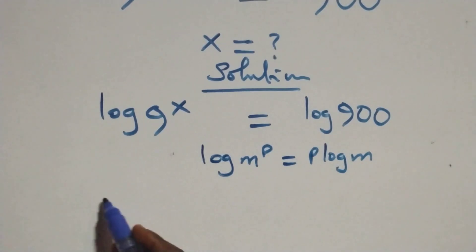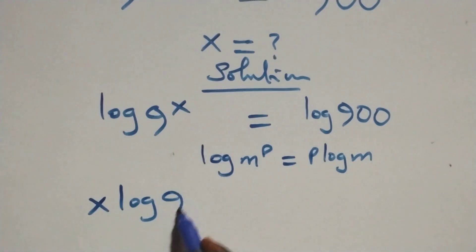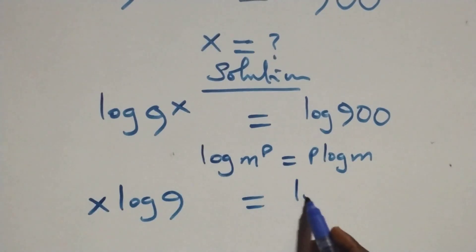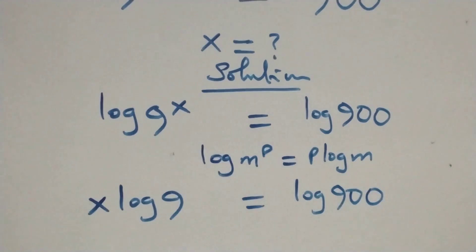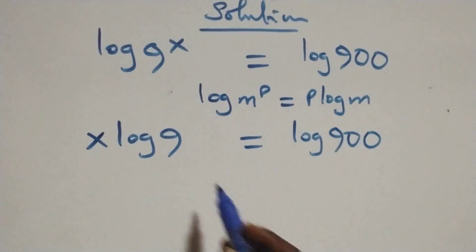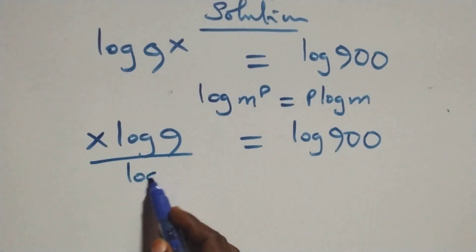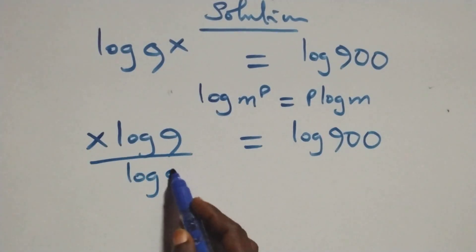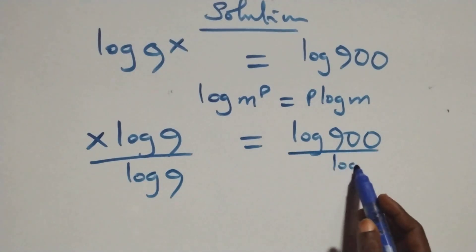Then what we have here becomes x·log 9 equals to log 900 on this side. And here we divide both sides by log 9 — divide this side by log 9, also divide this side by log 9.